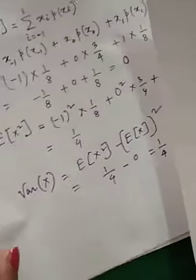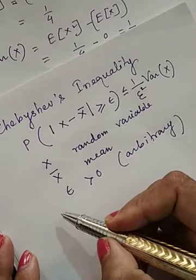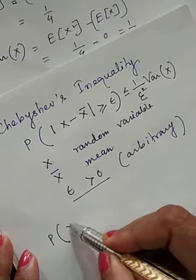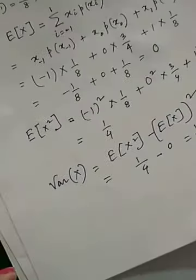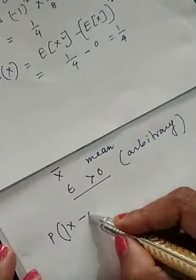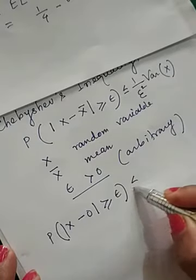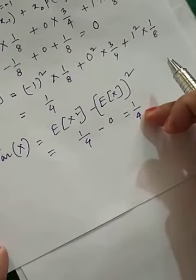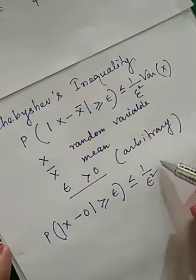Now, if we apply Chebyshev's formula, then for any ε > 0, we get: probability of |x − x̄| ≥ ε ≤ (1/ε²) · Var(X). Since the mean x̄ = 0 and variance = 1/4, this becomes: probability of |x| ≥ ε ≤ (1/ε²) · (1/4).